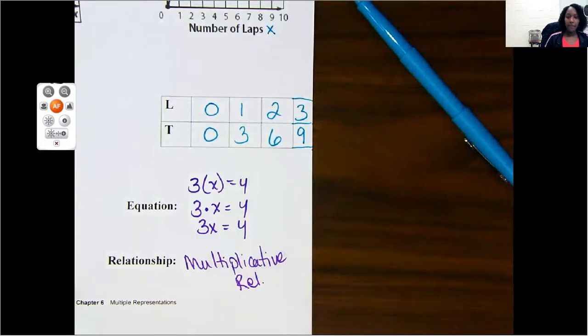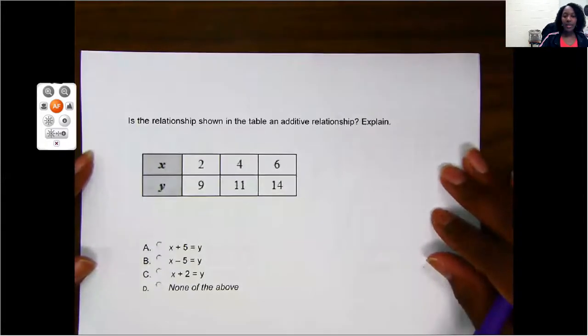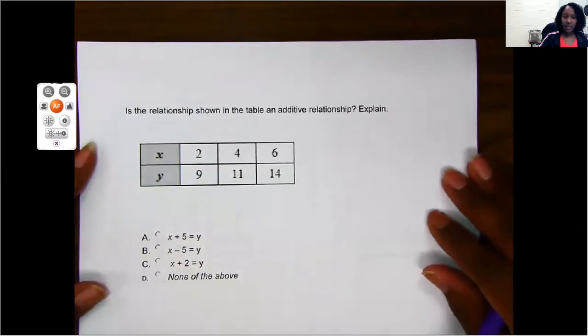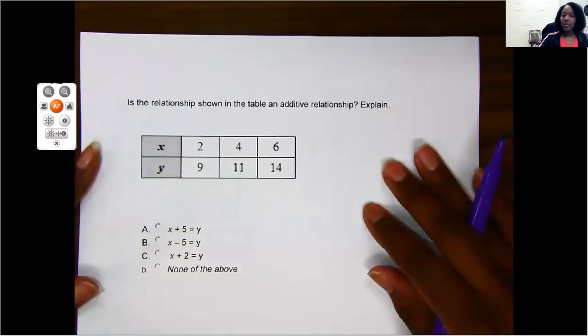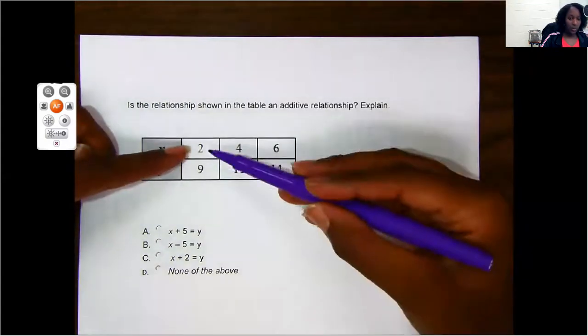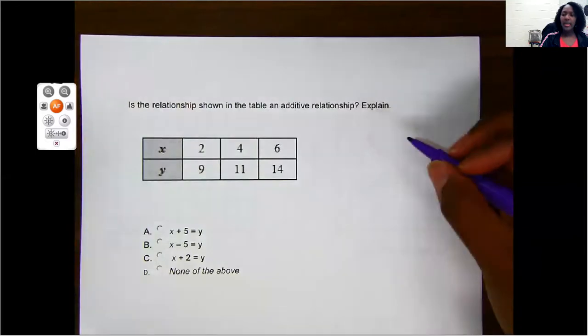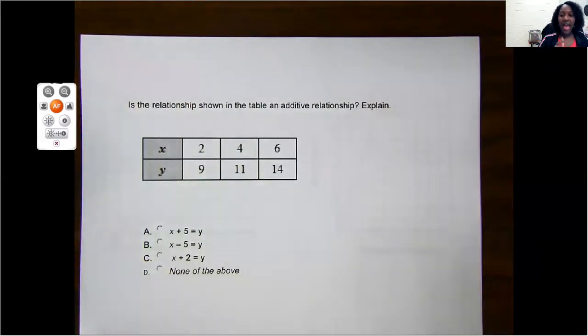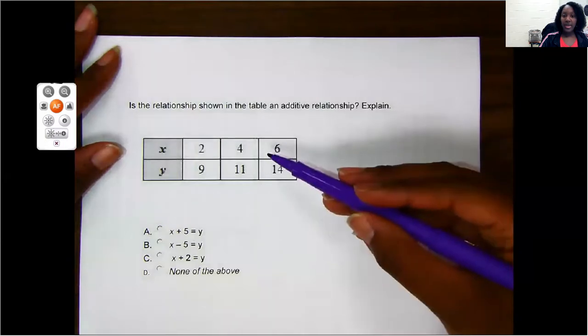Okay, alright, let's move on to some tables. Alright, let's look at this one. It says, is the relationship shown in the table an additive relationship and explain? Okay, don't worry about the explain part because we have multiple choice. Alright, so we need to see if it's an additive relationship. Remember, an additive relationship is if we add or subtract to get our answer. So if we look, we go from 2, 9, 4, 11, 6, 14, okay? Since my numbers are going up, I must have added or multiplied, okay? Now, since this is saying an additive relationship, I need to rule out multiplication. My answer needs to be in addition.